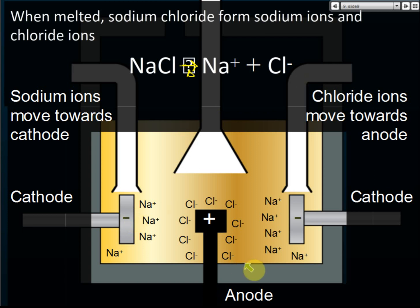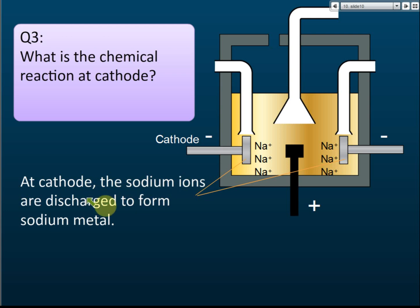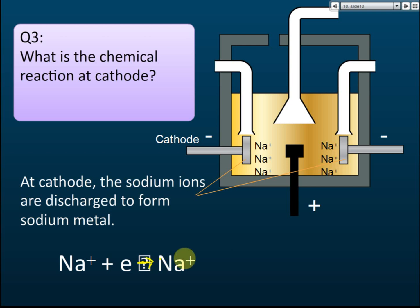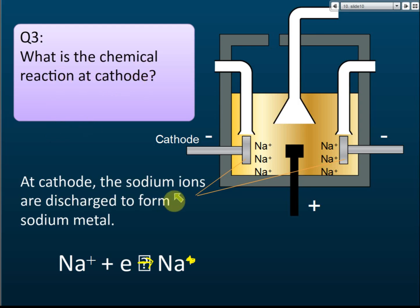When sodium ions go to the cathode, the chemical reaction that occurs is: the sodium ions are discharged to form sodium metal. Sodium ions receive electrons, and after receiving electrons they form sodium atoms. So at the cathode, sodium ions are discharged to form sodium metal.